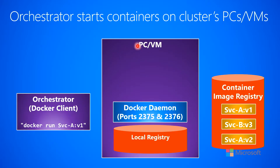As you can see on this slide, I have a PC or virtual machine here in the middle. It has a kind of file system, which we would call the local registry. This is where container images would exist, and initially the local registry is empty — there are no container images on it.